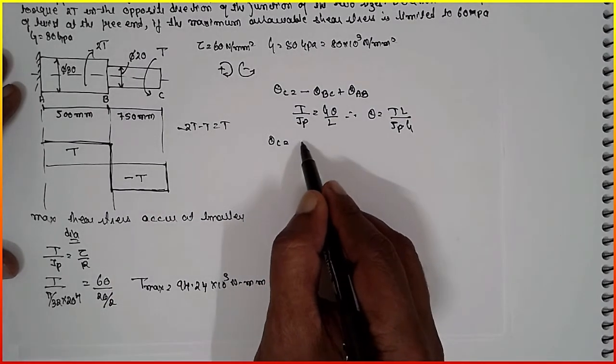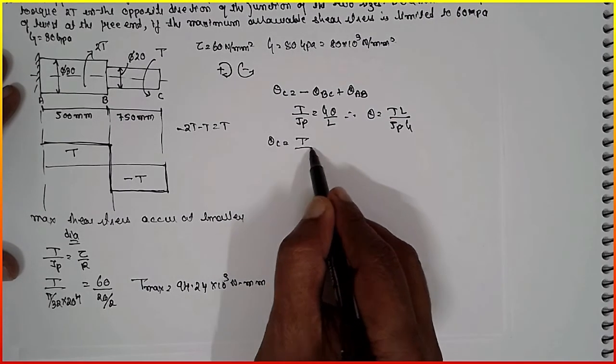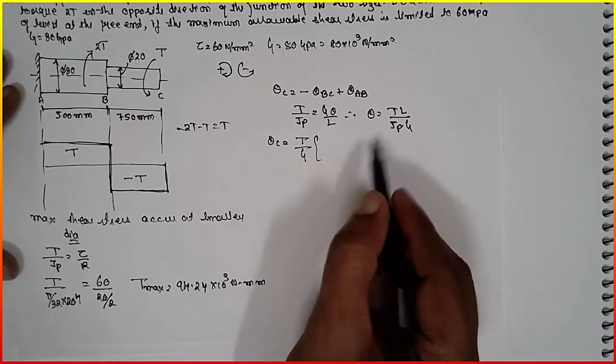Therefore, the T is common here and G will be common, G will be common.